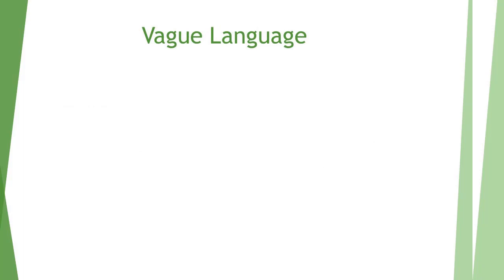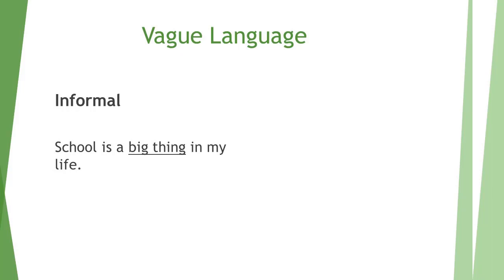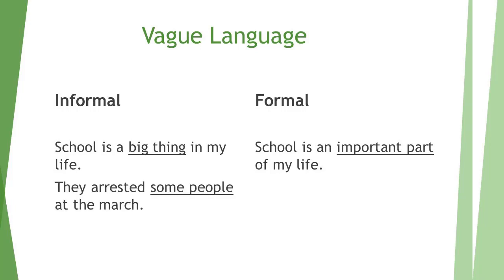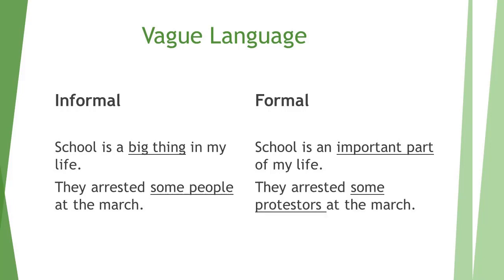Another thing to avoid when writing formally is vague language. Something informal would be to say 'school is a big thing in my life.' Consider what a word like 'big' means — my definition might be very different than yours, so that's vague. If I said 'school is an important part of my life,' I'm getting my idea across in a more formal way. Similarly, 'they arrested some people at the march' is unclear. Saying 'they arrested some protesters at the march' is more formal.